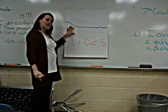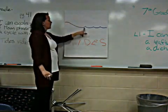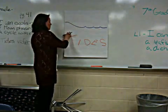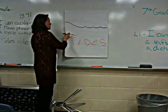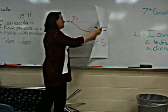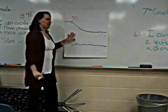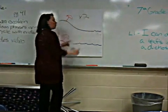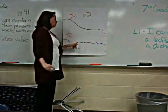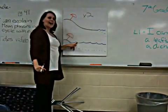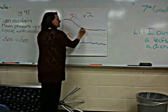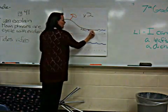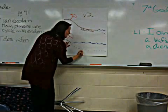Most of us think of the ocean as this pretty picture, with the water just rolling in over the sand. But if you were to stand at the beach for 24 hours, you would see this twice. The water at a very low level, and the water at a very high level. We call this low tide, and we call this high tide.